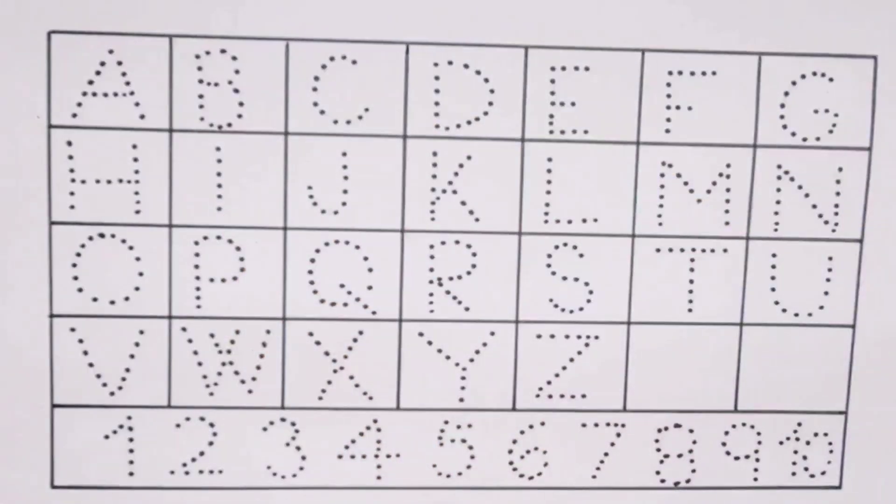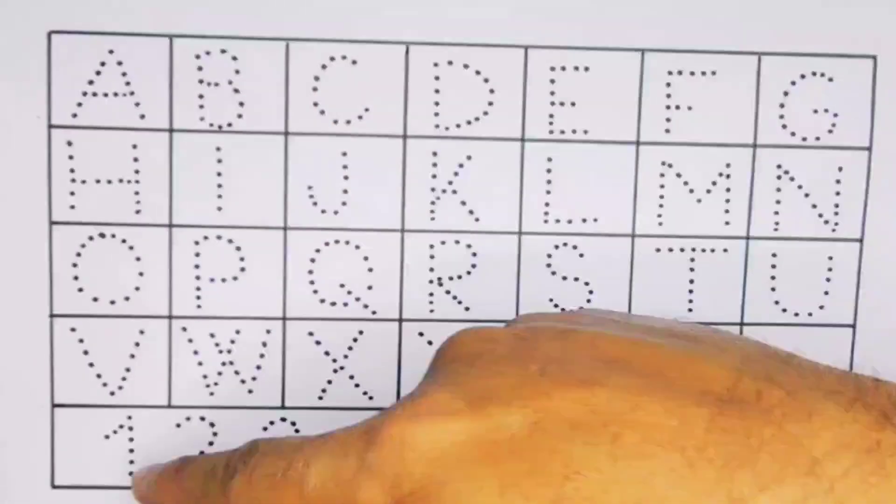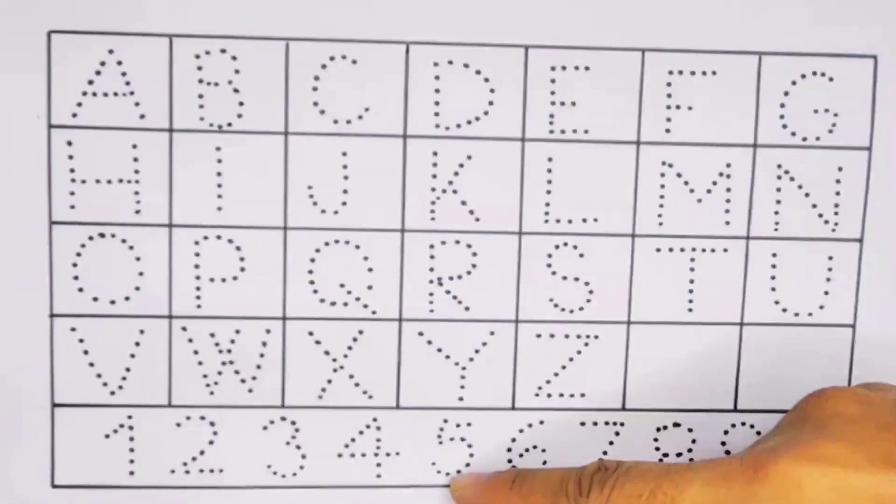Hello kids, welcome to my new video. Today we are going to learn the alphabet A, B, C, D and numbers counting 1, 2, 3, 4, 5.